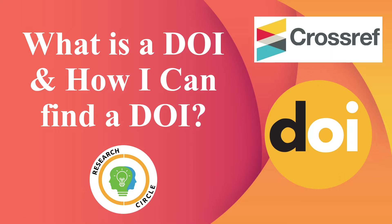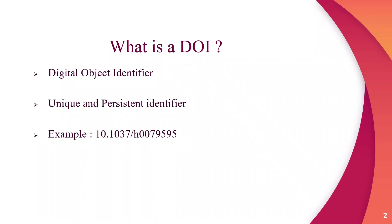A DOI, or Digital Object Identifier, is a unique string of letters, numbers, and symbols assigned to a published work such as an electronic journal article. The DOI provides a persistent link to the item located on the internet. At the bottom of the presentation you can see an example of a DOI.